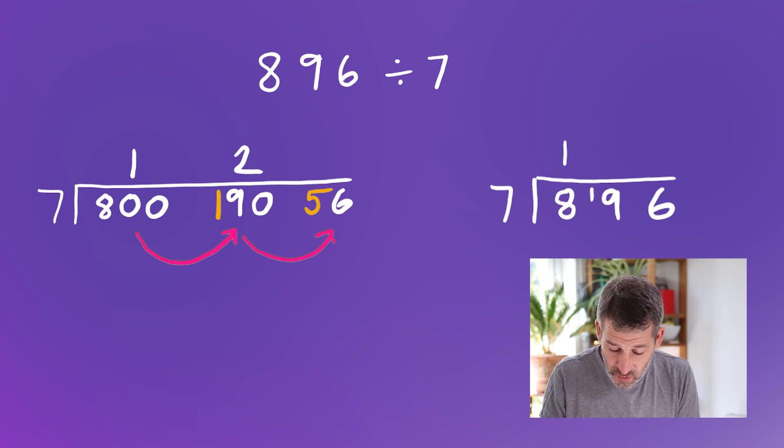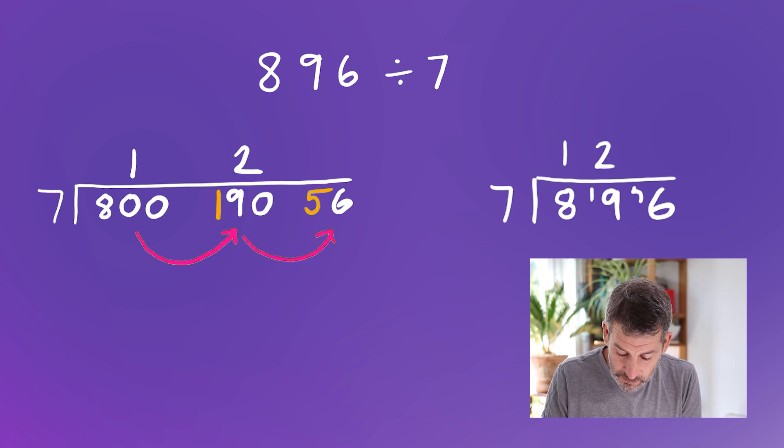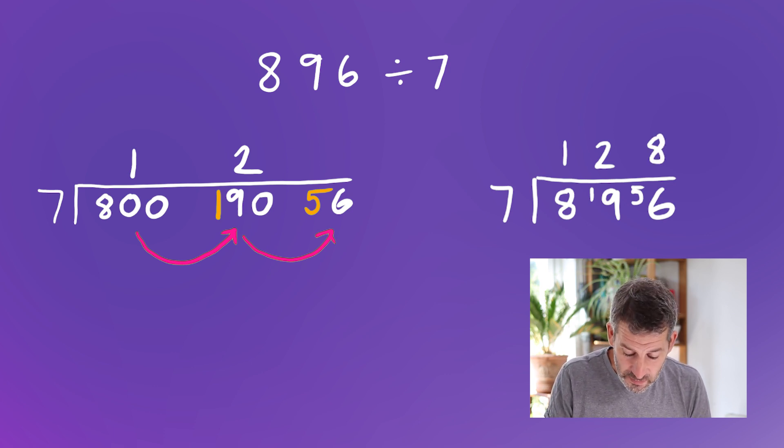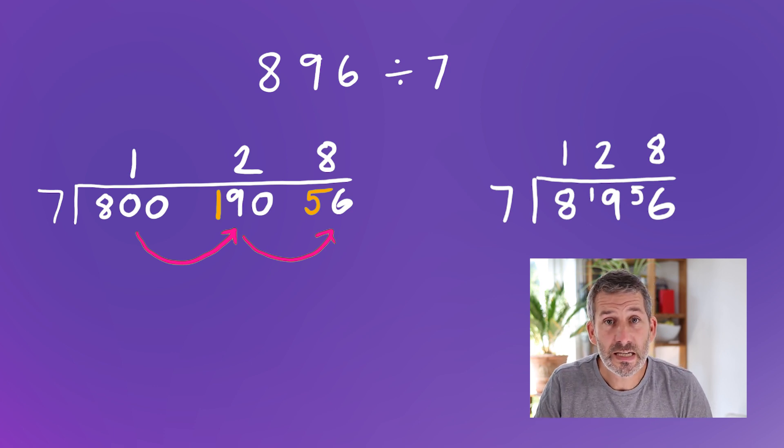Let's catch up with the short version. So it was, how many 7s go into 19? Well, 2 lots of 7 is 14. And there's 5 left over. So then the final thing, how many 7s go into 56? That is 8. 8 lots of 7 is 56. Same over here. How many 7s go into 56? That is 8. So 896 divided by 7 is 128.